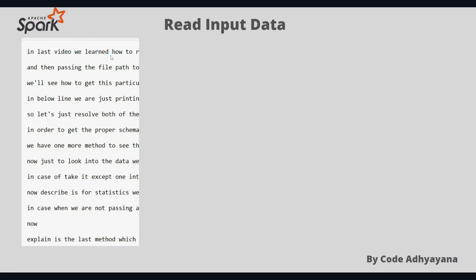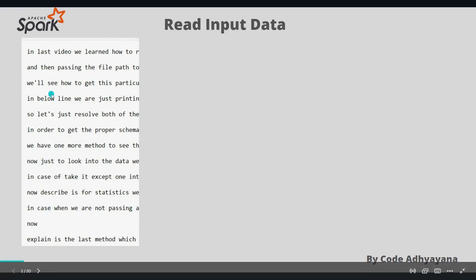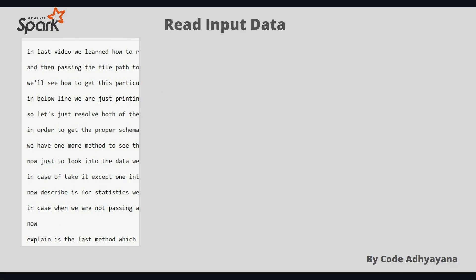When we want to solve any problem using Spark, think of it like a key and value pair. So how can we convert the data we have here to key and value? Since the problem statement is getting word count, the word should definitely be our key.